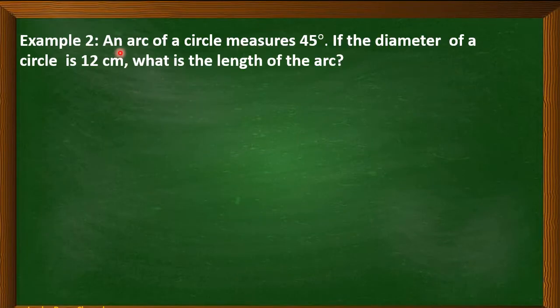Let's have example number 2. An arc of a circle measures 45 degrees. If the diameter of a circle is 12 cm, what is the length of the arc? So, let's determine the given data. We have here the value of A, the measure of the arc which is equal to 45 degrees. And the radius is 6 cm.